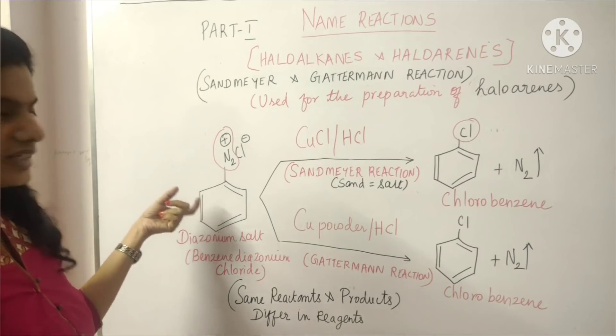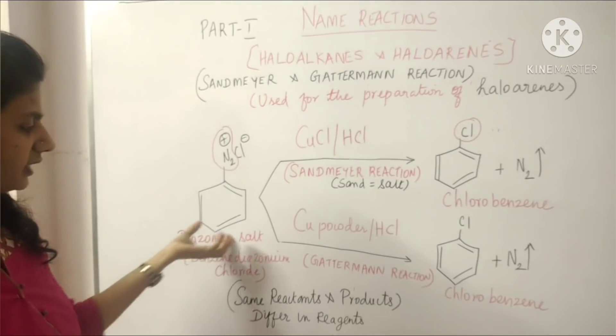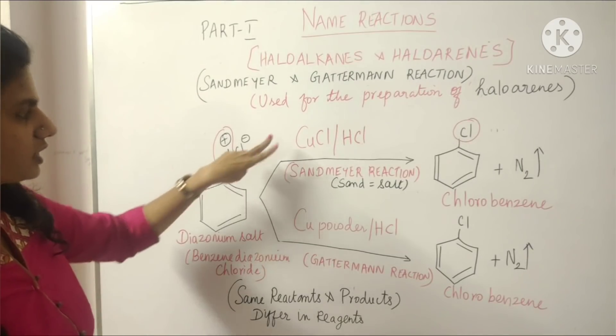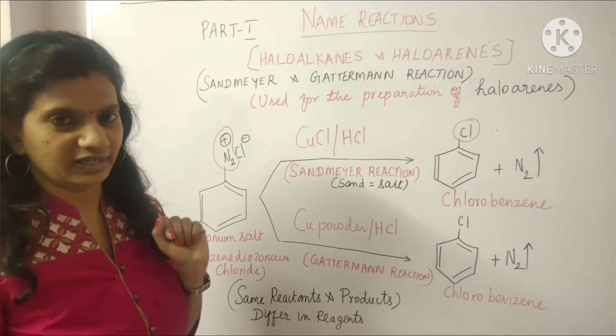So this is diazonium chloride. We will take diazonium chloride. We are using benzene diazonium chloride. See I wrote two things. This is for Sandmeyer reaction and this one is for Gattermann reaction.